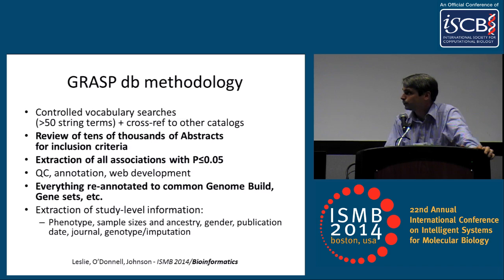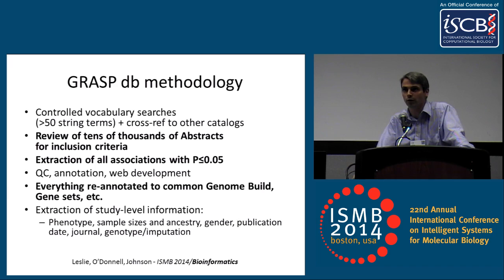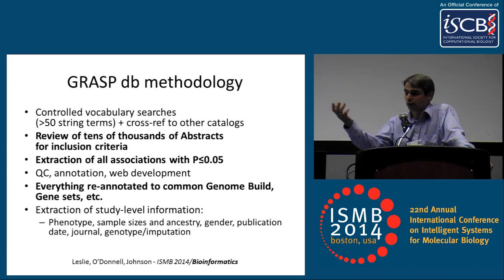The methodology — we have a controlled vocabulary string search that we use in PubMed. We use Quosa informatics software to facilitate the download of articles. Someone's reviewing essentially tens of thousands of abstracts to see if they meet our criteria as GWAS. The massive effort here is really going into all the materials from the articles, the supplemental materials, downloading results files if they're available somewhere online, and extracting all of the genetic associations at a nominal p-value threshold of 0.05.